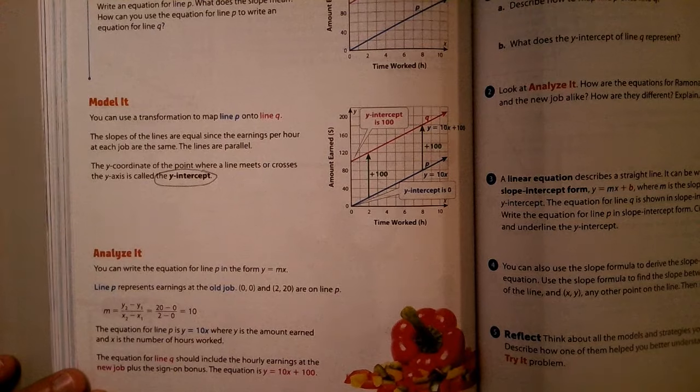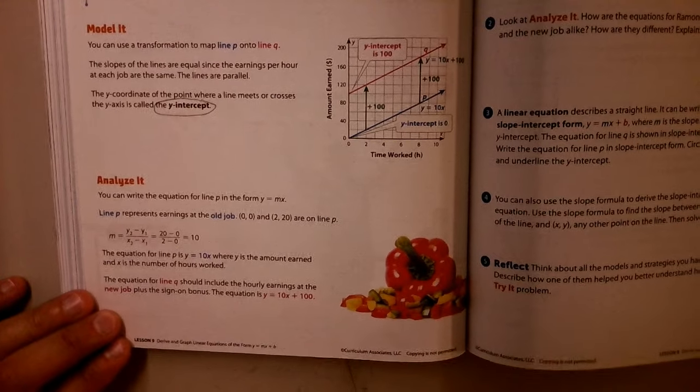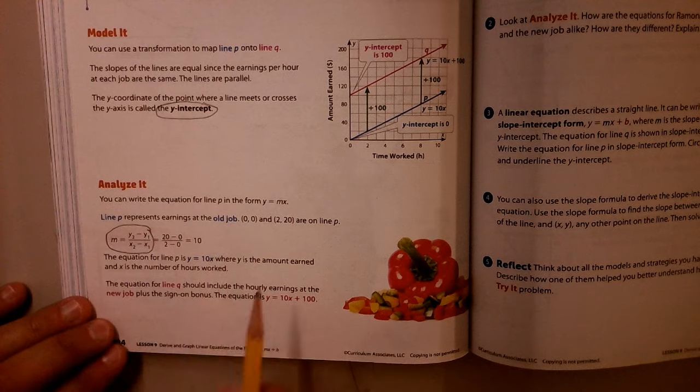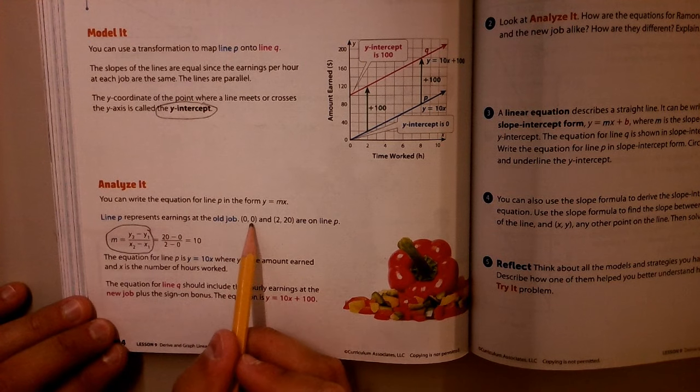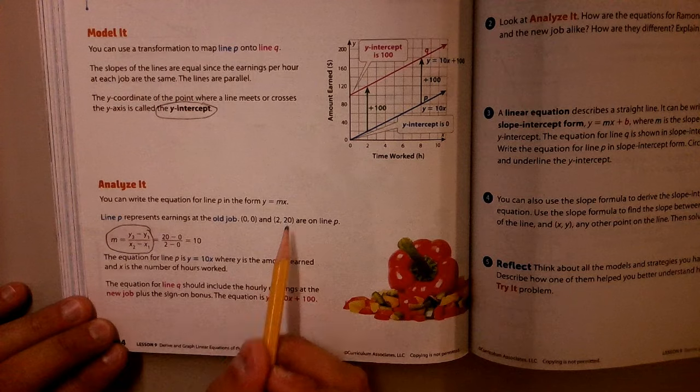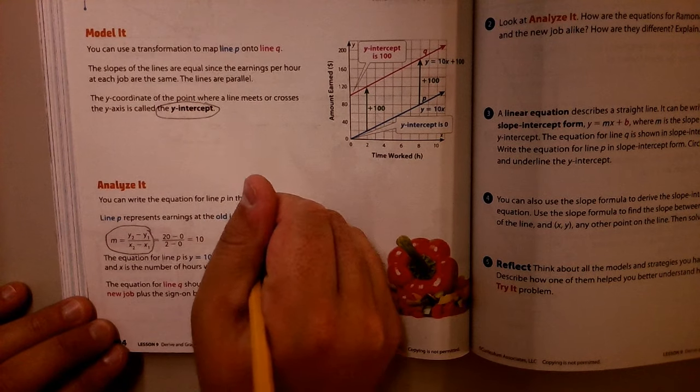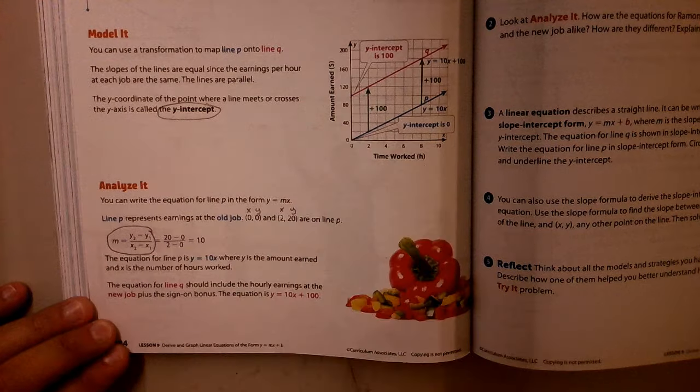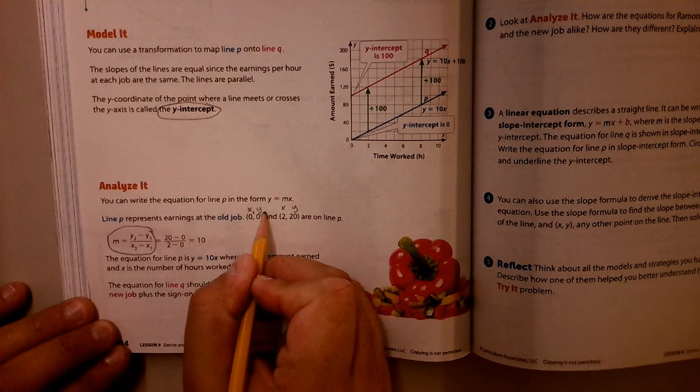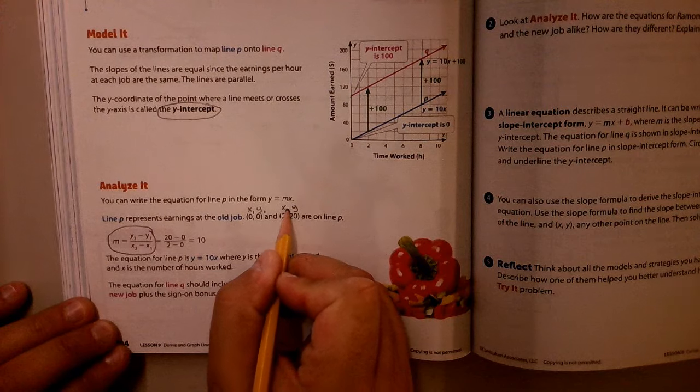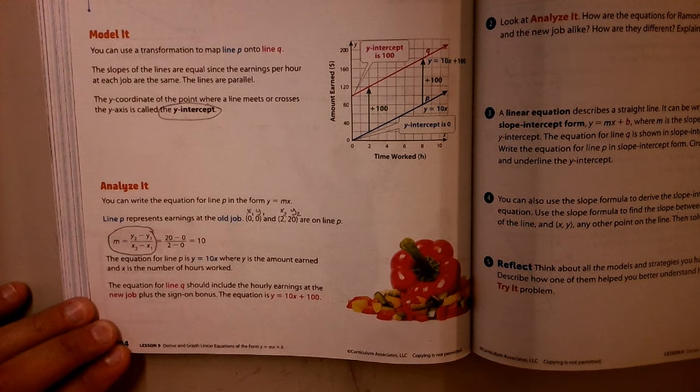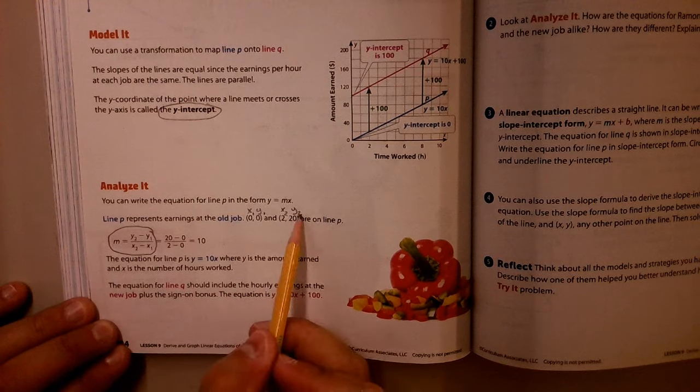And another thing I want to take a look at is where we used this formula. So we took two points, 0, 0, and 2, 20. Remember that every point is made up of an X and a Y. And since this is the first point, I'm calling this X and Y sub 1. And since this is the second one, we're calling it X and Y sub 2.